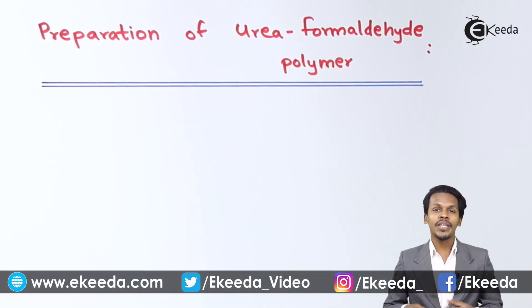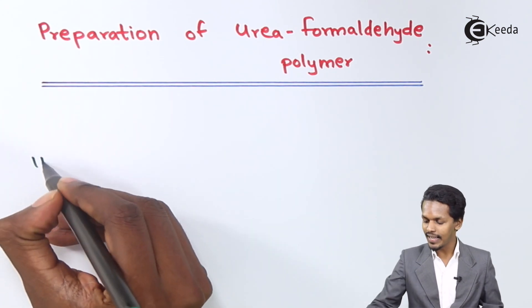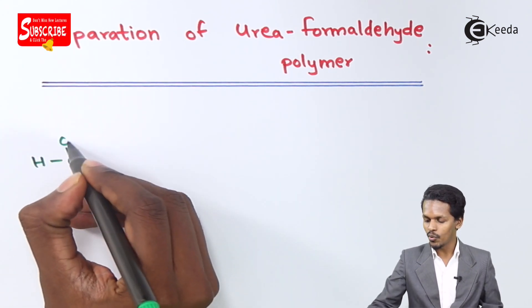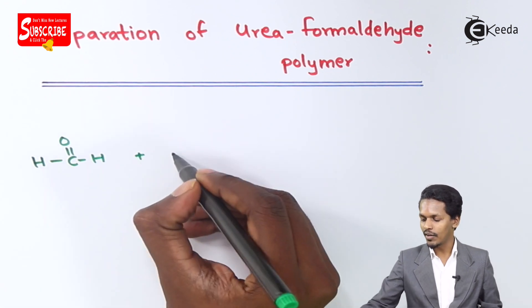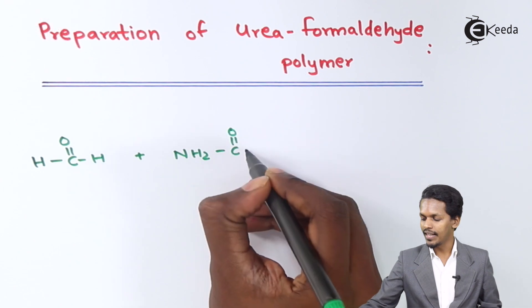So friends, now we are going to talk about the preparation of urea-formaldehyde polymer. As the name says, it is prepared from urea as well as formaldehyde. That's the reason we are using formaldehyde, that is H-C double bond O-H, along with urea, and that is what I could write as NH2-C double bond O-NH2.